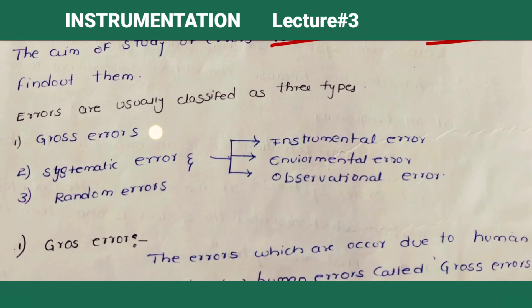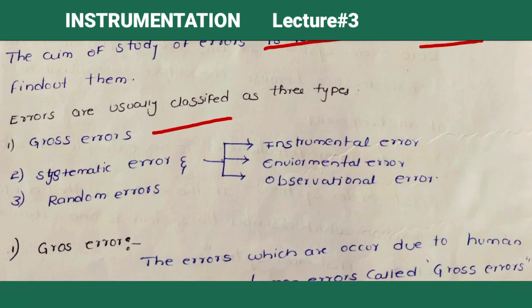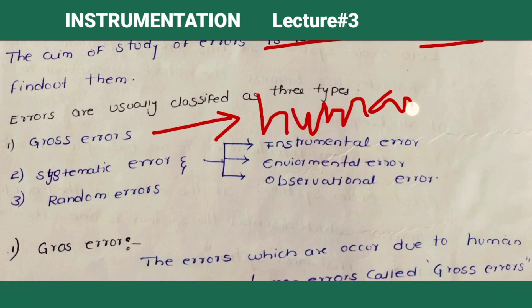Gross errors are the errors which are caused due to human mistakes. These errors occur due to improper usage of the instrument — while taking a reading, if you use the instrument improperly, these errors occur. Computational mistakes also come under gross error; while calculating any value, if you make a mistake, that is a gross error.